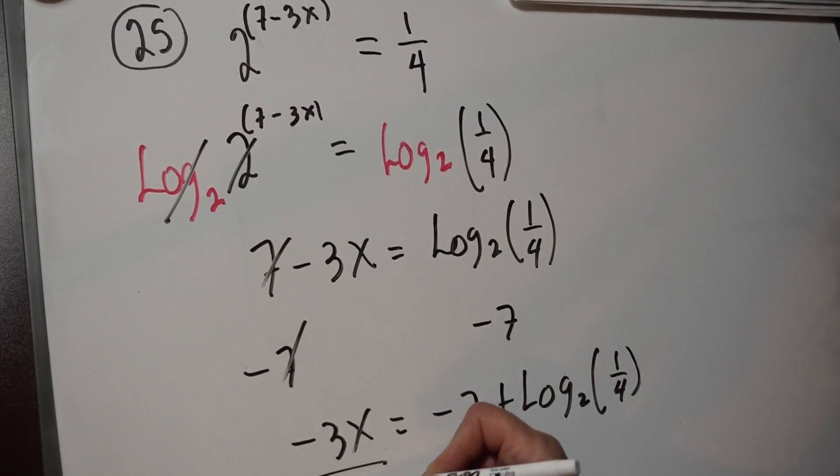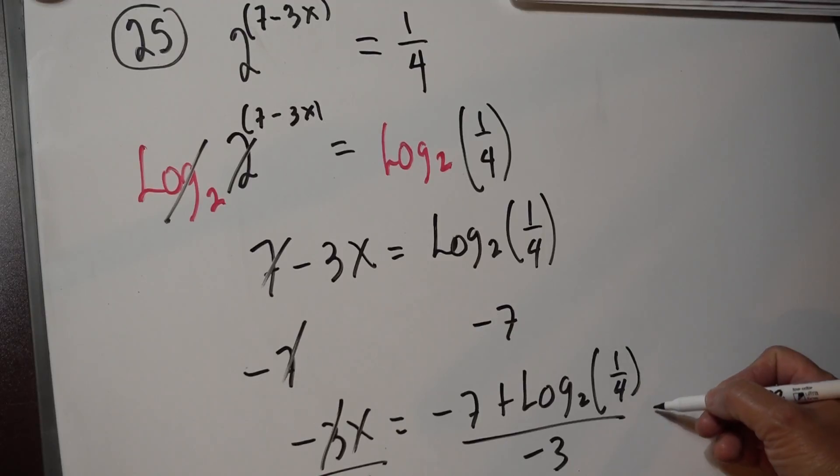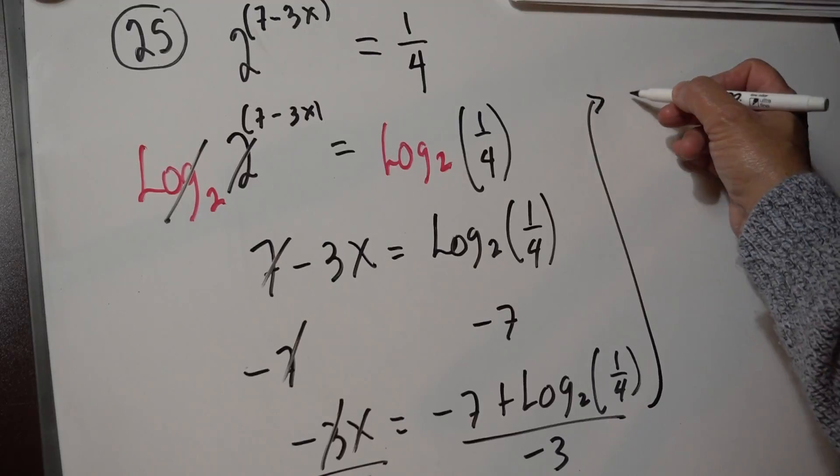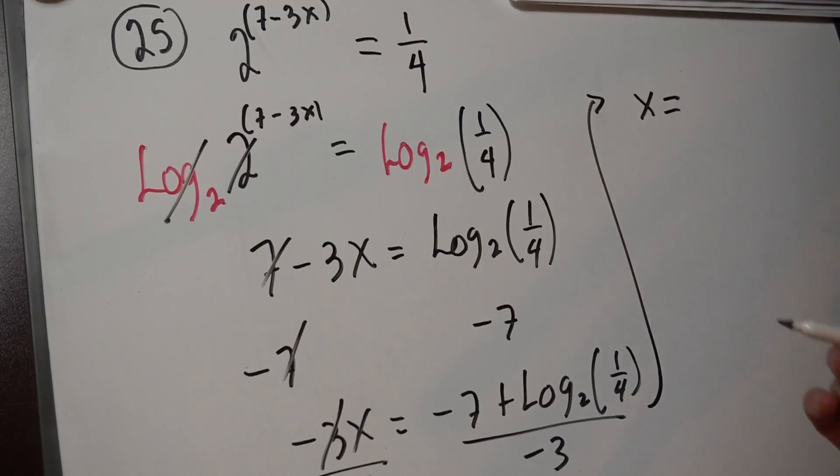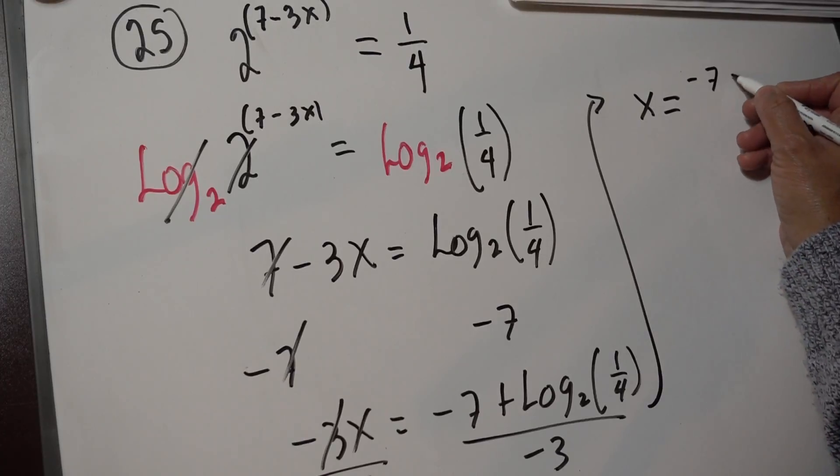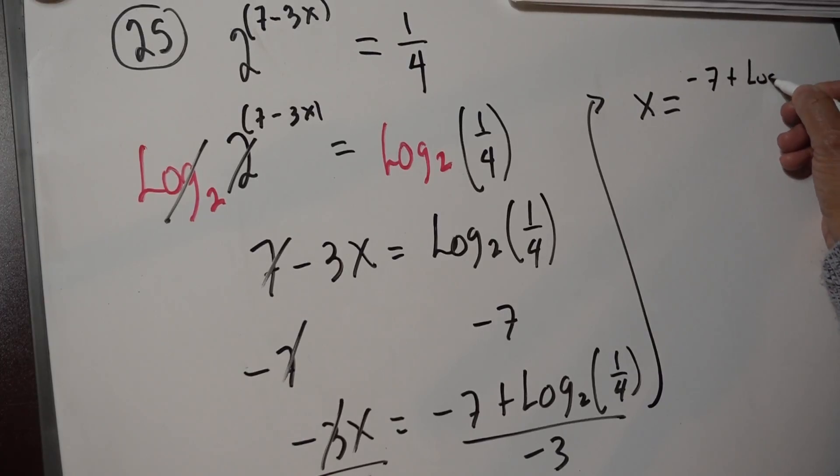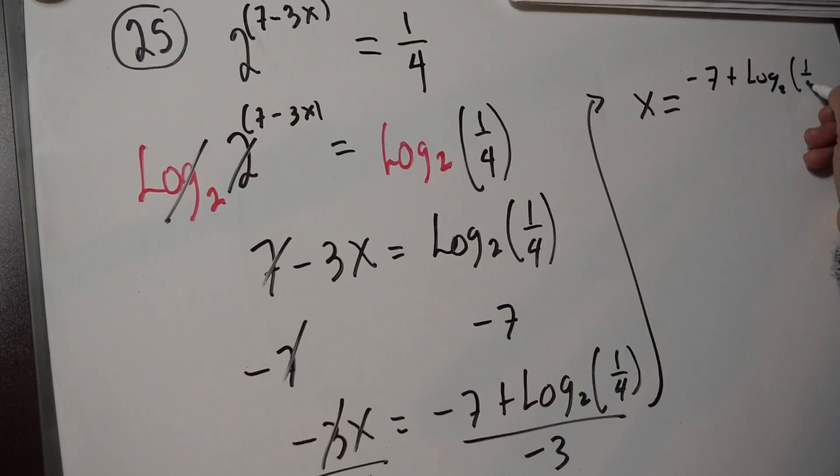We cancel this, and we have negative 3x equals negative 7 plus log base 2 of one fourth. At the end, we divide by negative 3. So we have this as an answer: x equals negative 7 plus log base 2 of one fourth over negative 3.